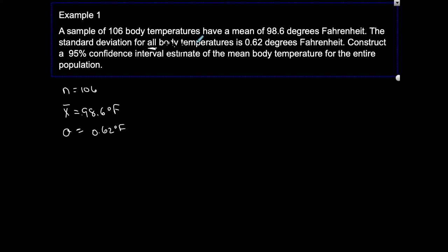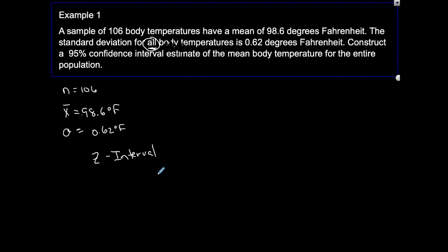Now, if they had said 'a sample of 106 body temperatures have a mean of 98.6 degrees Fahrenheit and a standard deviation of 0.62,' that would imply that standard deviation comes from the sample, and that would be S instead of sigma. But because they say the mean from the sample is 98.6 — that's the sample mean — and the standard deviation for all body temperatures is the population standard deviation, sigma is known. Therefore we use our Z-interval calculator trick.